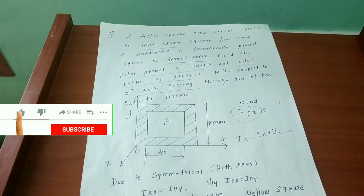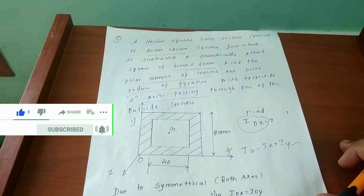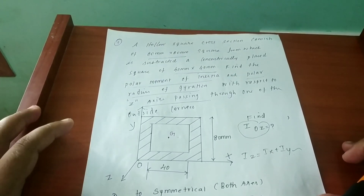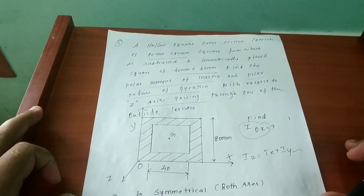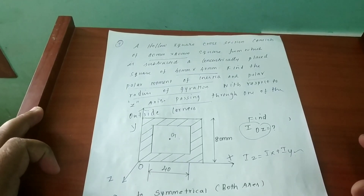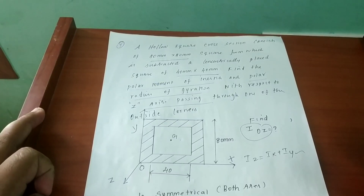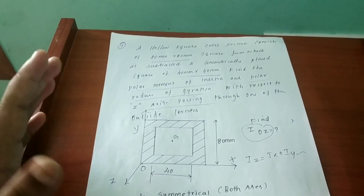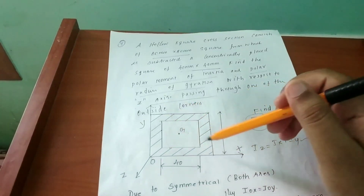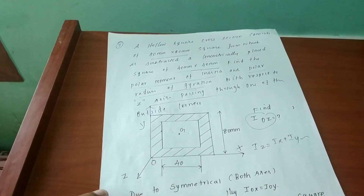In the moment of inertia Type 4 problem, here is what they are giving: a hollow square cross-section consists of an 80 by 80 mm square from which is subtracted a concentrically placed square of 40 by 40 mm. That means two squares — one larger square and one smaller square — and this square is a hollow structure.